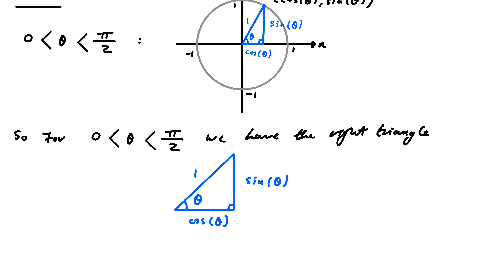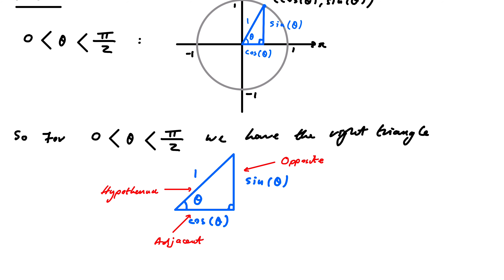If that's my angle and I'm talking about the edges, I give them all names. This one, of course, is called the hypotenuse. This is called the opposite, for obvious reasons. And this is the adjacent edge, because it's adjacent — it's beside θ.